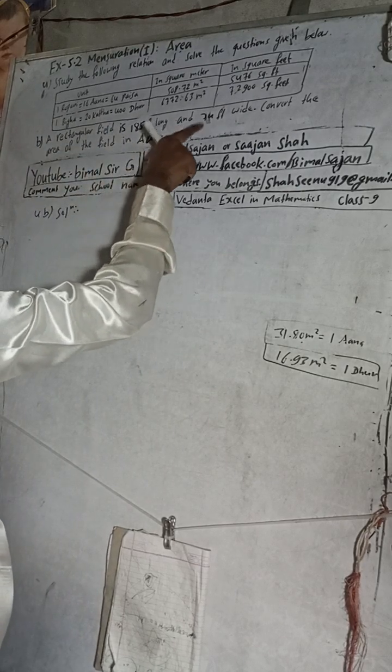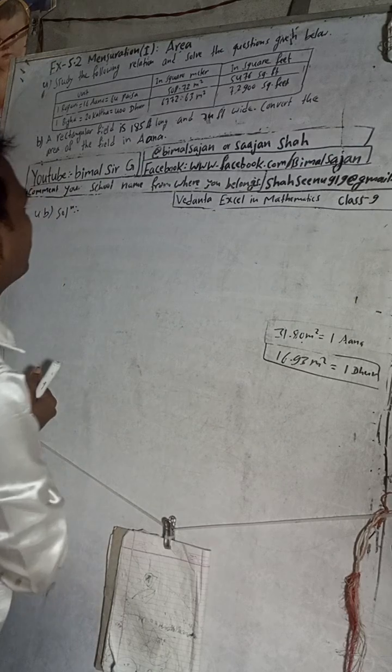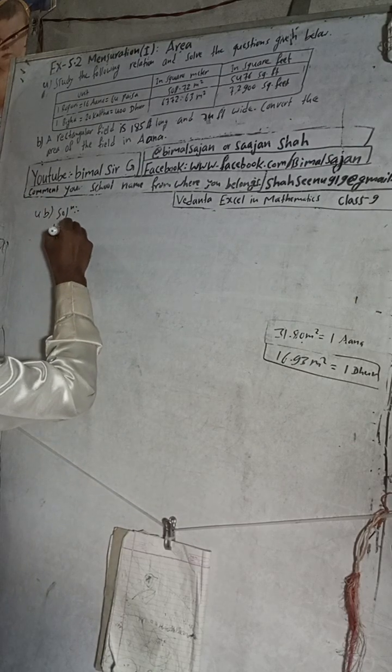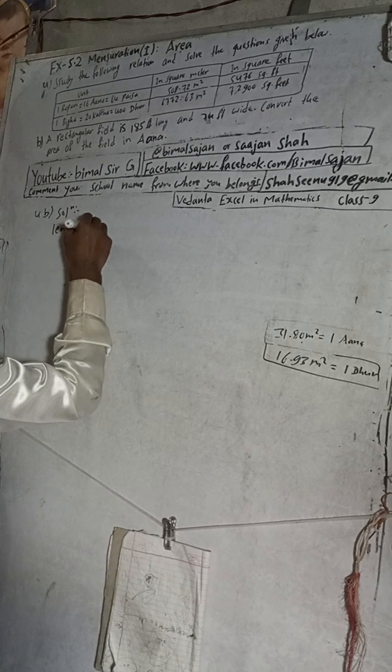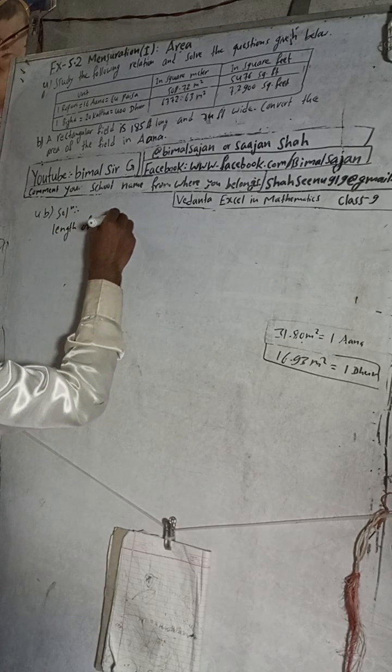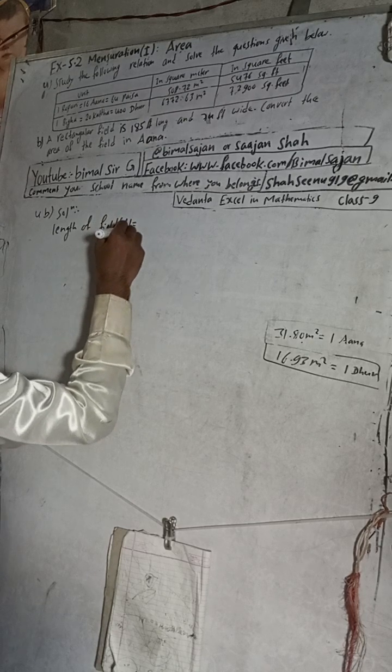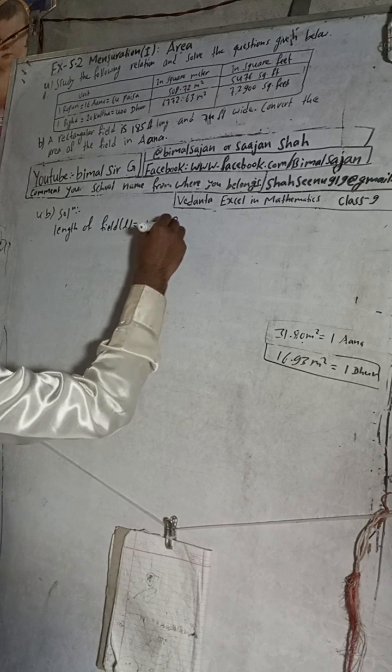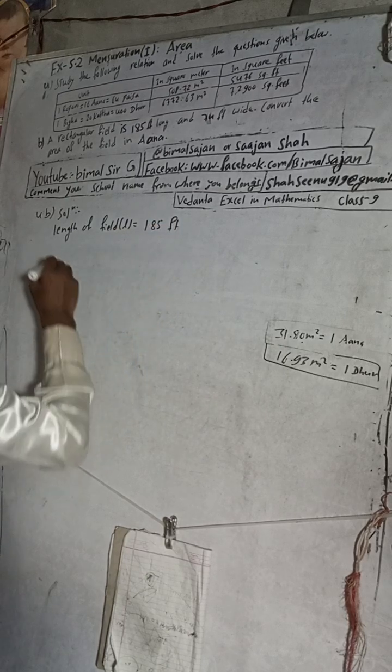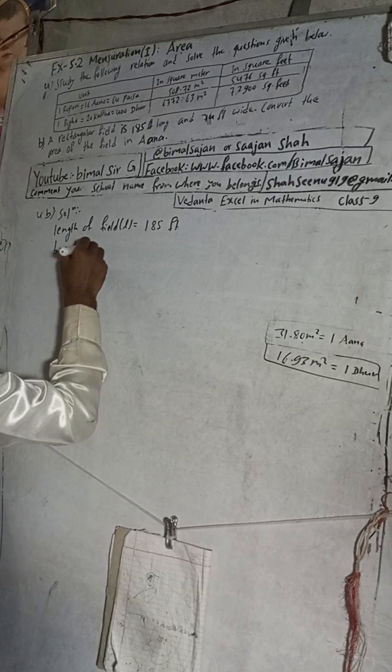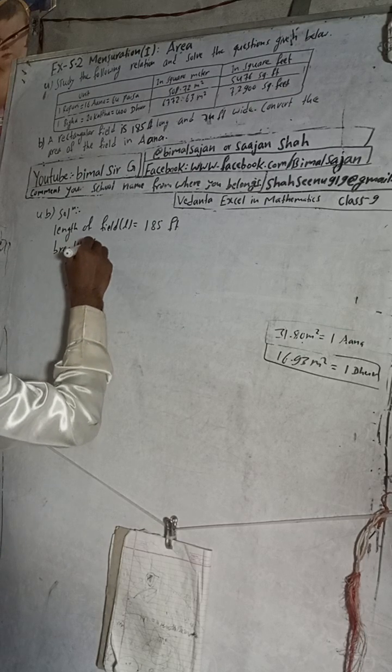The question is: a rectangular field is 85 feet long and 74 feet wide, convert. So now, length of field, length of field is equal to 185 feet.